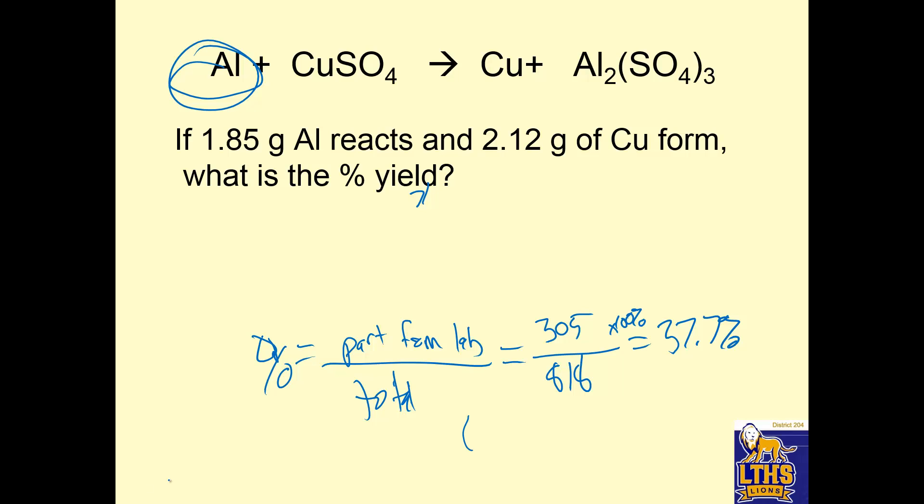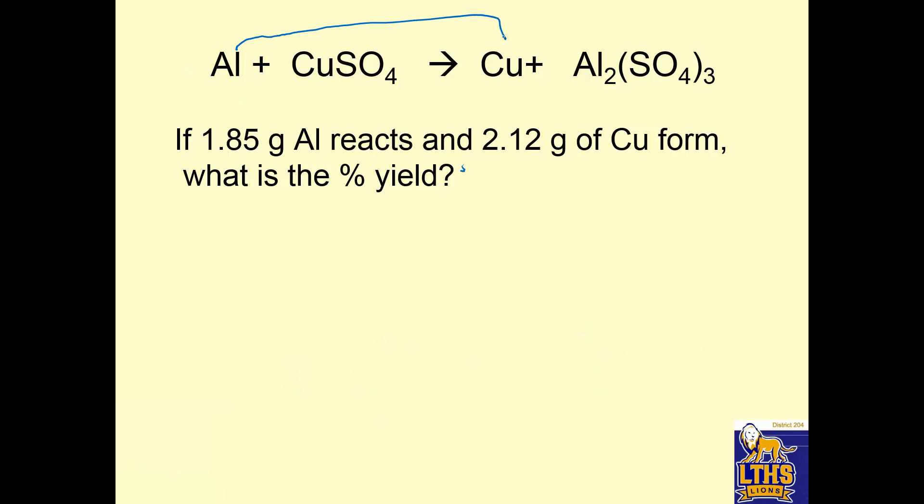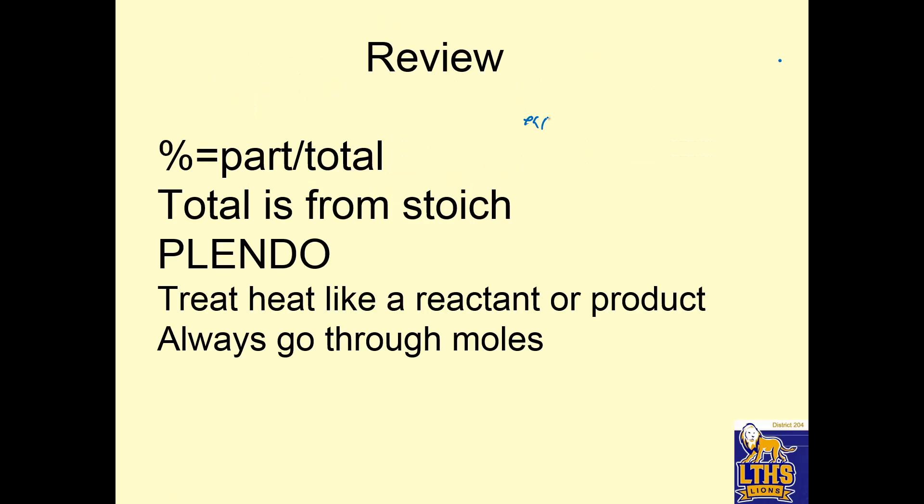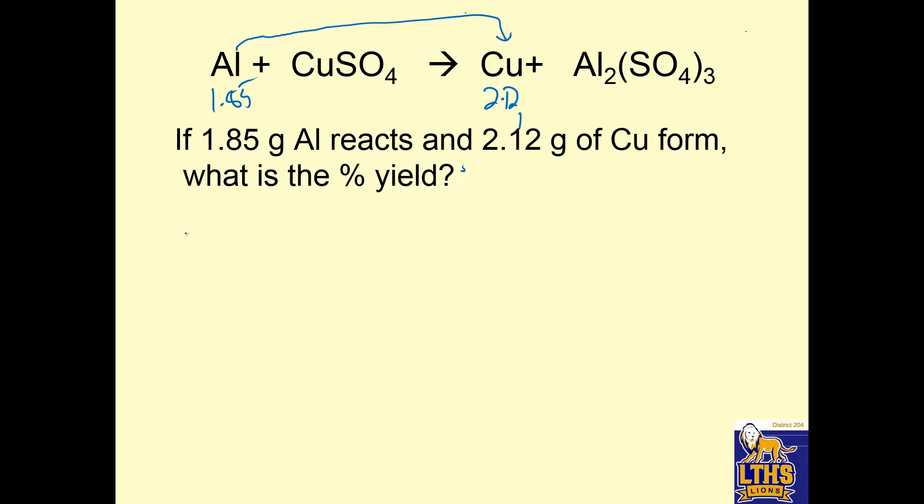If 1.85 grams of aluminum reacts and 2.12 grams of copper form, what is the percent yield? So what I'm going to do is take my aluminum and convert it into copper. So I'm going to take 1.85 and I'm going to turn it into my 2.12. Now it's probably going to be less.